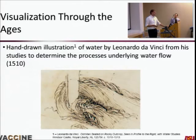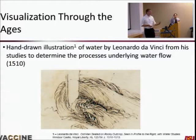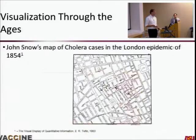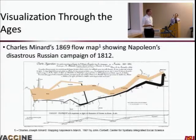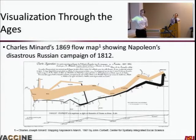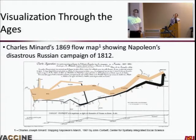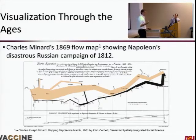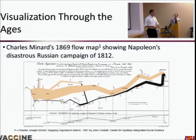We've had ideas of visualization through the ages. We have Leonardo da Vinci's hand-drawn illustrations of water to study flow. We have John Snow's famous map of cholera cases in London. Charles Minard created flow maps of Napoleon's disastrous campaign in Russia — you can see the size of his army in light brown as it advances and then the inevitable retreat, with the width of the line representing army size and showing what's left in the aftermath.